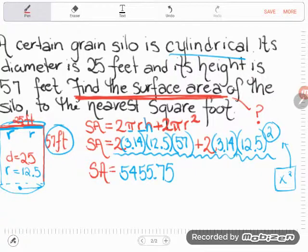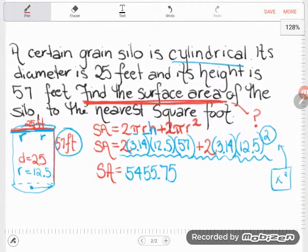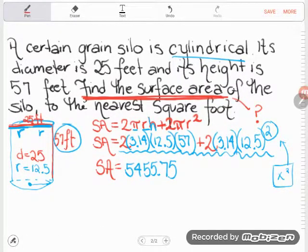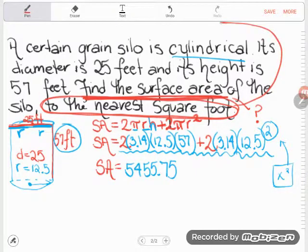Now careful. Even though my work's all right, even though this is all true information, if I were to just stop right here on the GED, I would actually get marked wrong. Why? Because there were directions I have not yet followed. Take a look at these directions here. They had asked me to find the surface area of the silo to the nearest square foot. Do you see that language? Language to the nearest. That's rounding language.